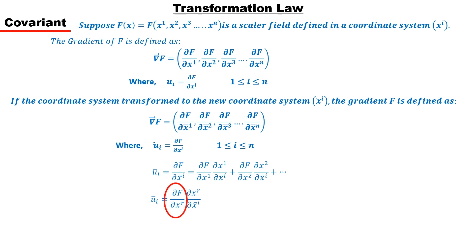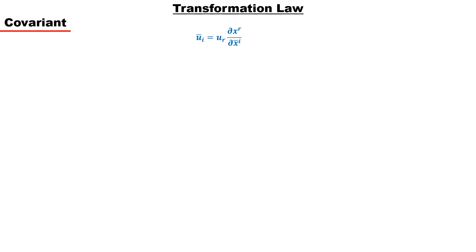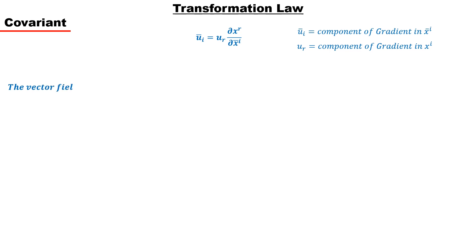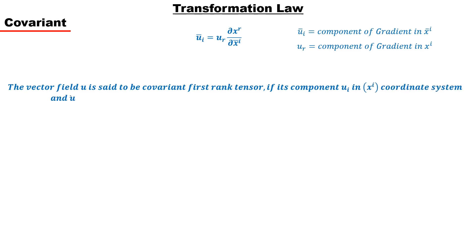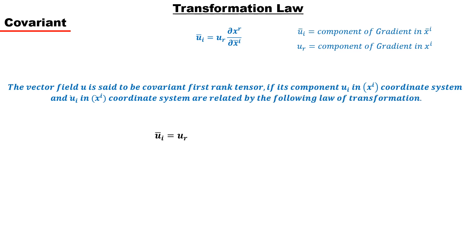Note that ∂f/∂x-super-r equals u-sub-r, which is the component of the gradient in the x-super-i coordinate. This describes the transformation of the gradient from one coordinate to another, where u-bar-sub-i is the component in the x-bar-super-i coordinate, u-sub-r is the component in the x-super-i coordinate, and ∂x-super-r / ∂x-bar-super-i represents the transformation between the two coordinate systems. In general, if u is a rank-1 covariant tensor, the transformation between both coordinate systems is given by this law.